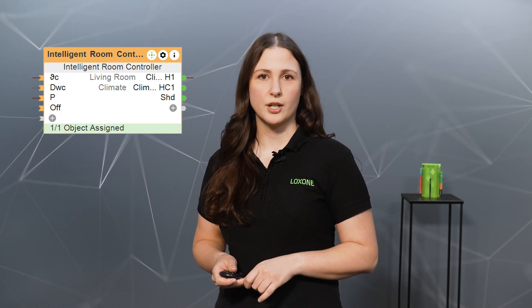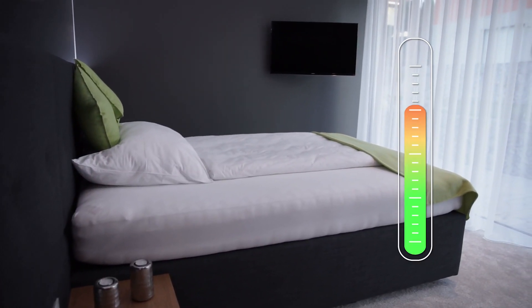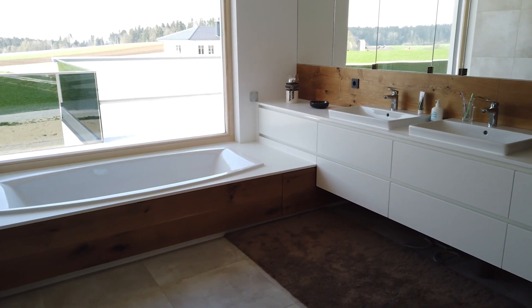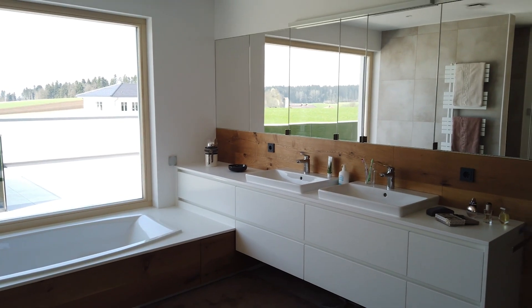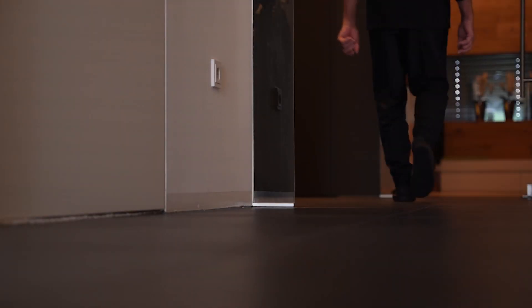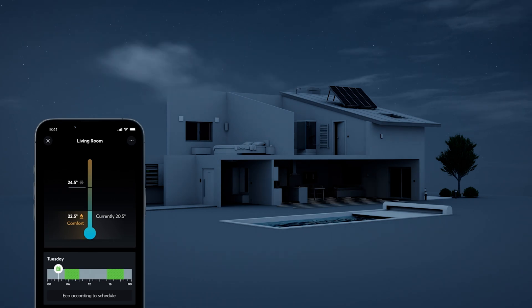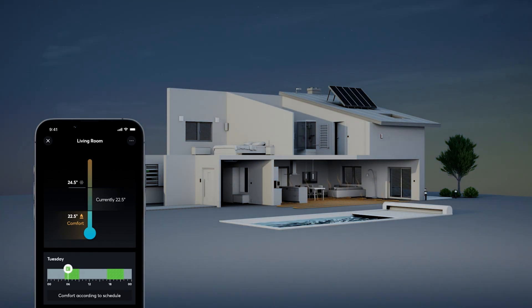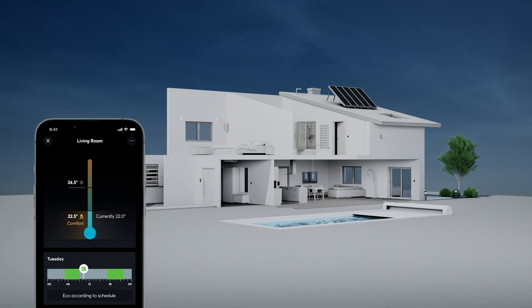In the Luxone Config and app, the function block called Intelligent Room Controller is our main way to control the air conditioning of a room. The function block learns on its own how quickly a room heats up and cools down, so it can control the actuators accordingly. Let's say the basic temperature in a room is 70 degrees Fahrenheit or 20 degrees Celsius, but you want it to be 72 or 22 degrees respectively at 7 a.m. Since the Intelligent Room Controller learns that the room heats up by, let's say, 1 degree per hour, it starts heating at 5 a.m. so that by 7 a.m. the desired temperature has been reached.